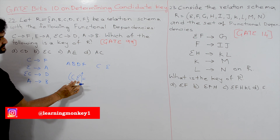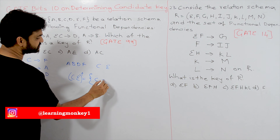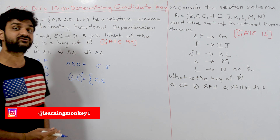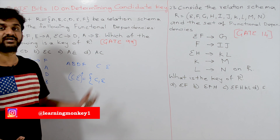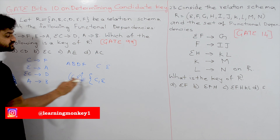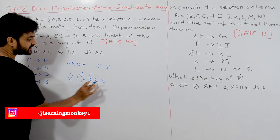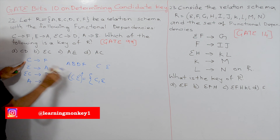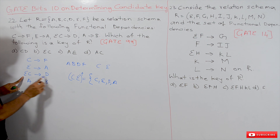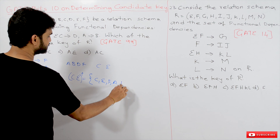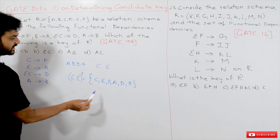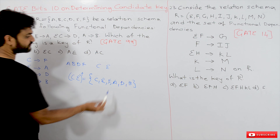We start our first combination with C and E. C is obtained directly. C determines F. E determines A. E determines D. And A determines B. So from the closure of {C, E} we get A, B, C, D, E, F — all the attributes in the relation.